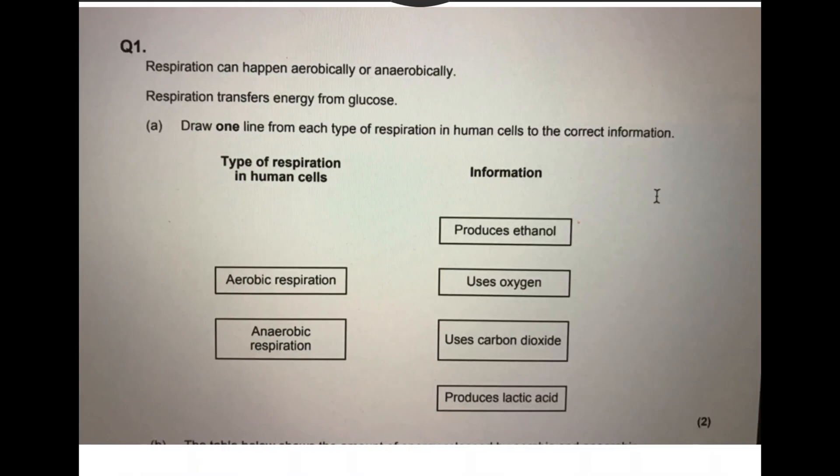Okay, so question 1A. It's worth two marks. Respiration can happen aerobically or anaerobically. So knowing the difference between aerobic and anaerobic respiration. Remember, aerobic respiration is with oxygen. Anaerobic respiration is without oxygen. Respiration transfers energy from glucose. Draw one line from each type of respiration in human cells to the correct information.